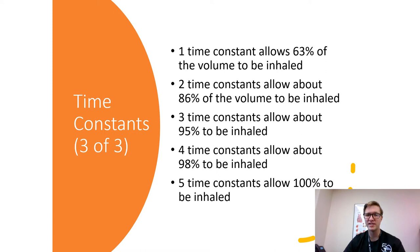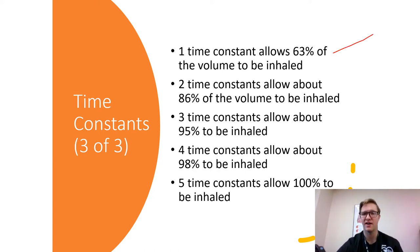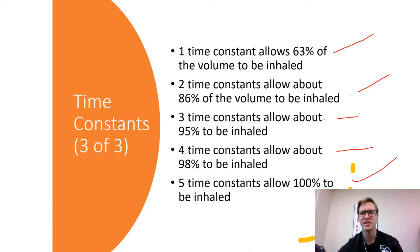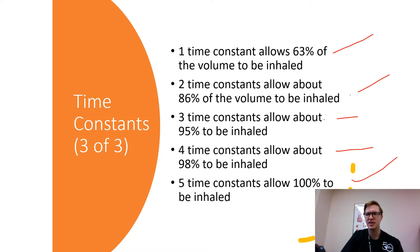Key time constant percentages to memorize: one time constant equals 63% of tidal volume inhaled; two time constants equal 86%; three time constants equal 95%; four time constants equal 98%; five time constants equal 100% of tidal volume delivered or exhaled. You don't want to overshoot either — giving 12 time constants unnecessarily is not the goal.